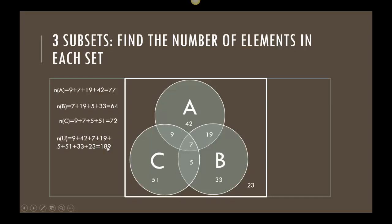What I want you to notice as well is if I added the 77, 64, and 72, that's a lot bigger than 189. And the reason is a lot of these numbers belong to multiple sets. The 7 belongs to A, B, and C. This 5 belongs to both B and C. So when I'm thinking about cardinalities and adding things up, you want to keep track of the relationships between the intersections and how many times you're really adding those numbers together.